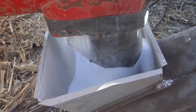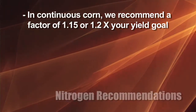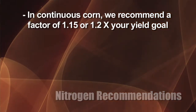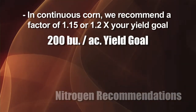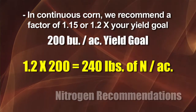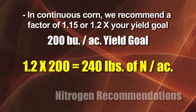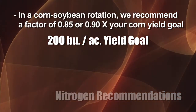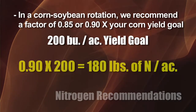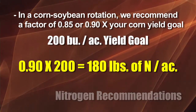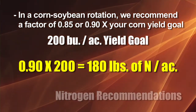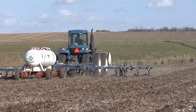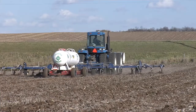For specific nitrogen recommendations on corn: if you're raising continuous corn, use a factor of either 1.15 or 1.2 times your yield goal. So if your yield goal is 200 bushels and you use the 1.2 factor, that's 240 pounds of nitrogen. In a corn-soybean rotation, use a factor of 0.85 or 0.9. At 0.9 times a 200-bushel yield goal, that equals 180 pounds of nitrogen for the corn year.